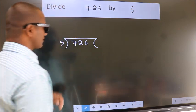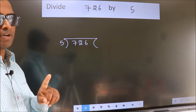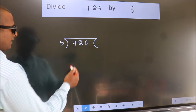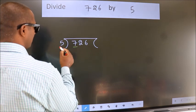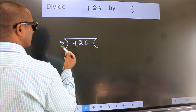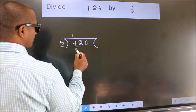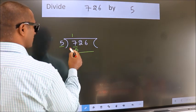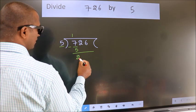This is your step 1. Next, here we have 7, here 5. A number close to 7 in 5 table is 5 once 5. Now, we should subtract. We get 2.